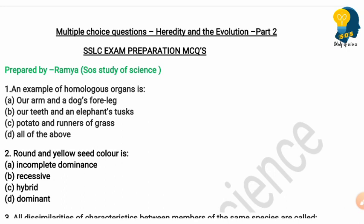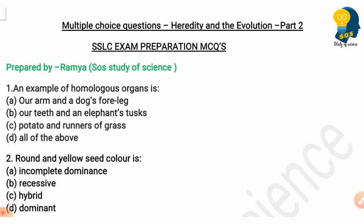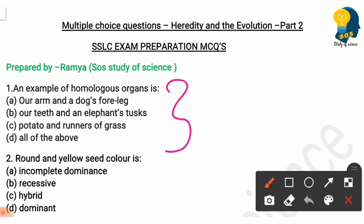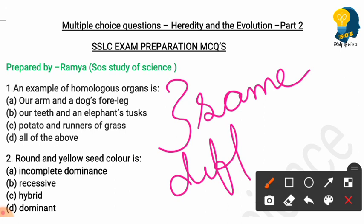The first question is: an example of homologous organs is — options are: our arms and the dog's four legs, our teeth and an elephant's tusk, potato and the runners of grass, and all of the above. First of all, what is meant by homologous organs? Homologous organs are organs which have the same origin but different functions.